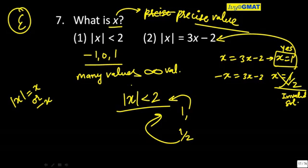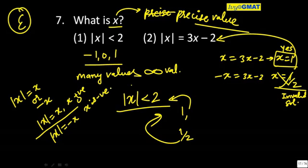Can you tell me why is x equal to half not satisfying that equation? Some reason. When do you say mod of x equals x, and when do you say mod of x equals minus x? In which condition? When x is positive or 0, and mod of x equals minus x precisely when x is negative.